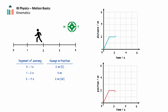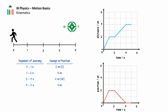Next, the person turns around and walks two meters west in two seconds, then pauses in place for one second. The person has traveled an additional two meters, bringing their total distance to four meters. However, the person has changed direction and walked back to their starting position. Their total displacement for the same journey is zero meters, as if the person had not left their initial position.